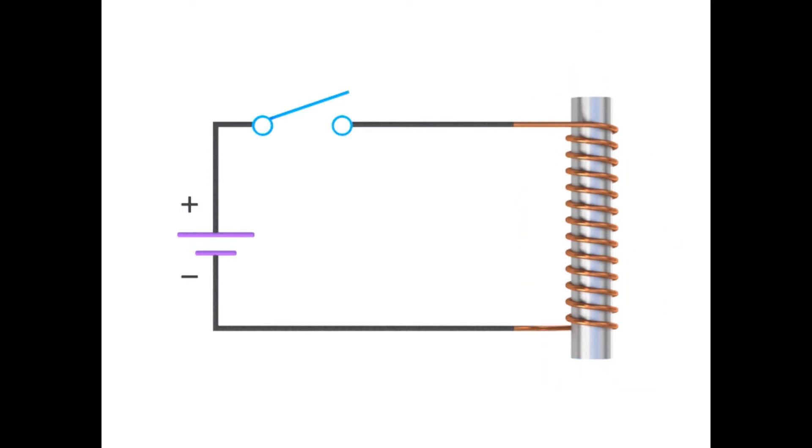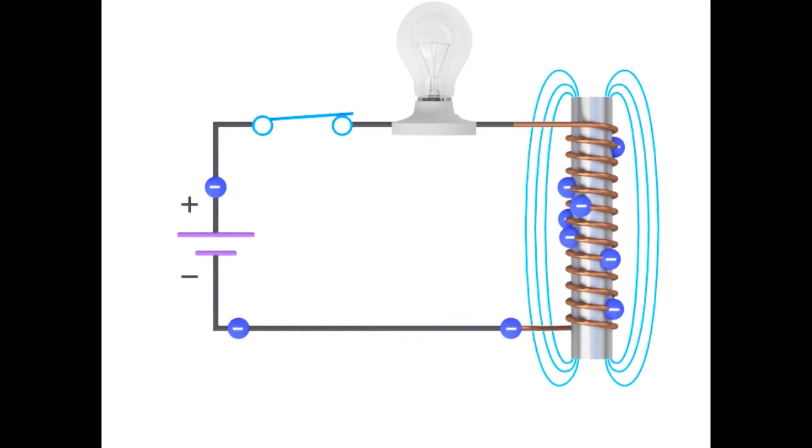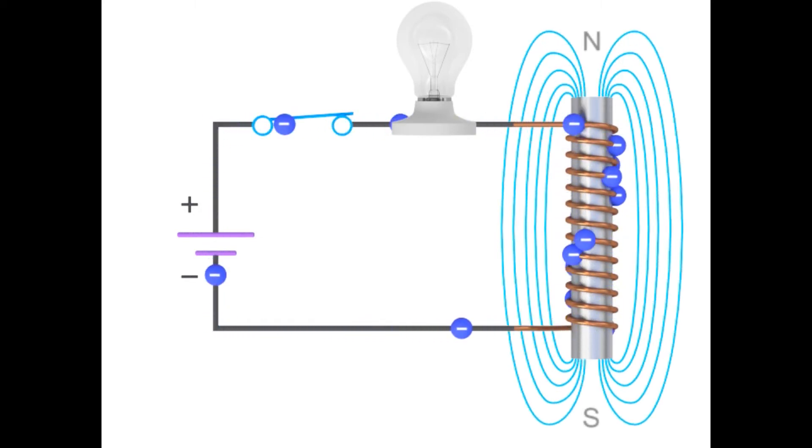To demonstrate the properties of an inductor, we'll add a resistance, or light bulb, to this circuit. As the switch is closed and the current flows through the circuit, the electromagnetic field in the inductor forms and expands rapidly.